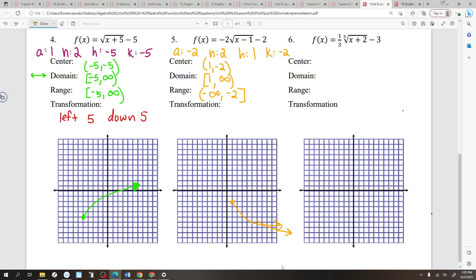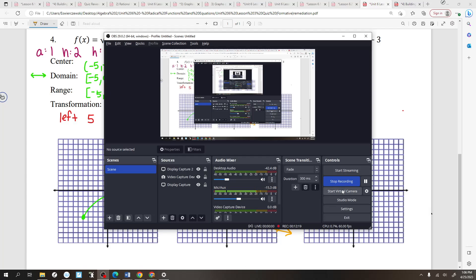Transformations would be right one, down two. It's going to have a reflect. And it's going to have a stretch of two. I'm going to pause the video there because this video is going to be absolutely terrible. I apologize to those of you watching this at home on YouTube. I'm sorry. I tried my best. Let's see how bad.